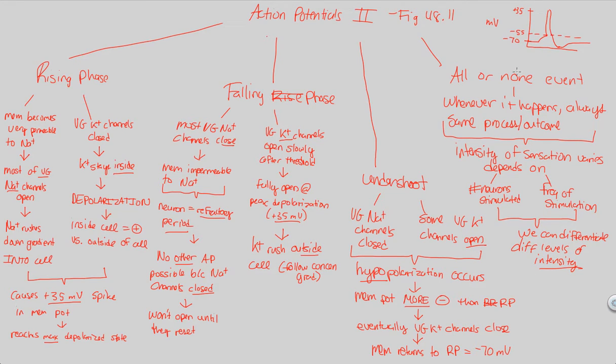Not that an action potential was so strong that it went to positive 99 millivolts. No, that's not what happened. It went to positive 35, but maybe it did that a lot and a lot of neurons did that or maybe it did that over a long period of time, frequency there. That covers our look at action potentials.